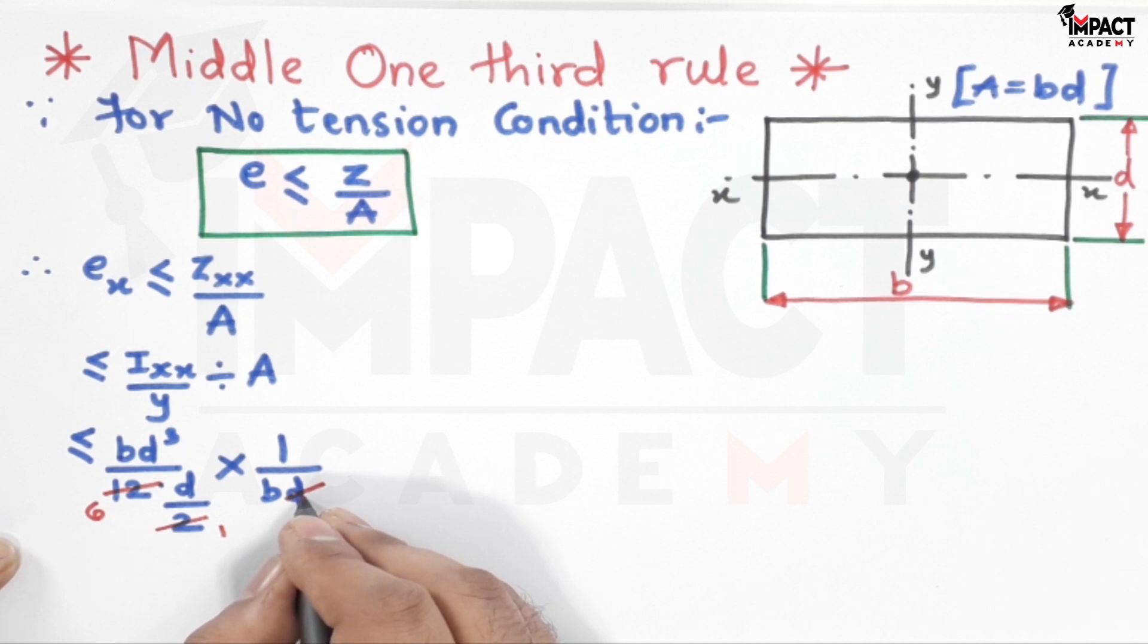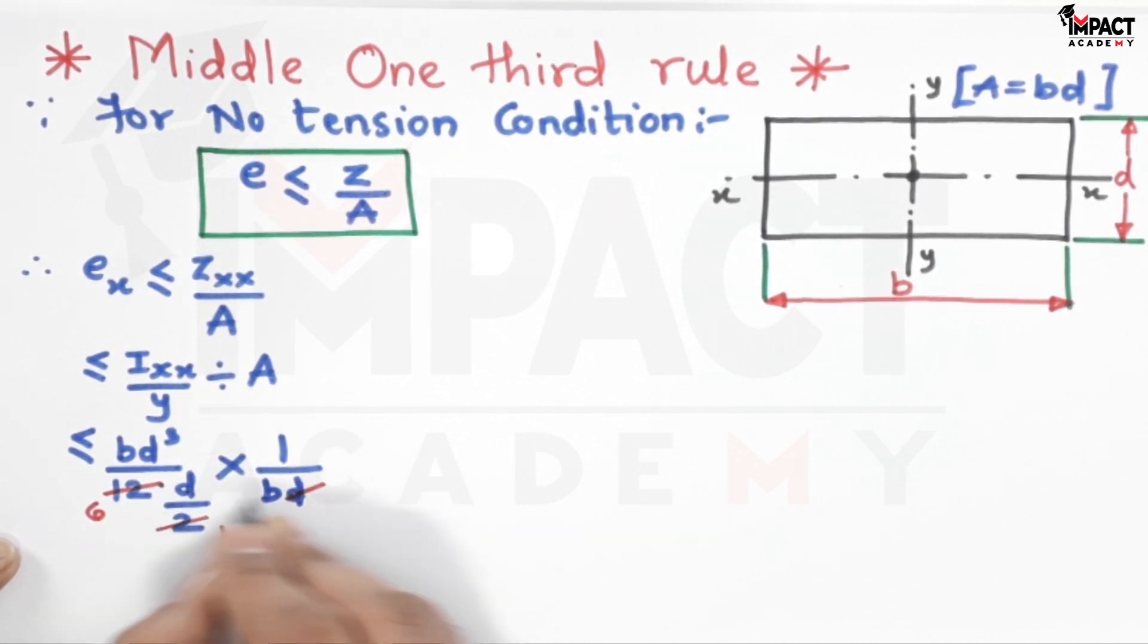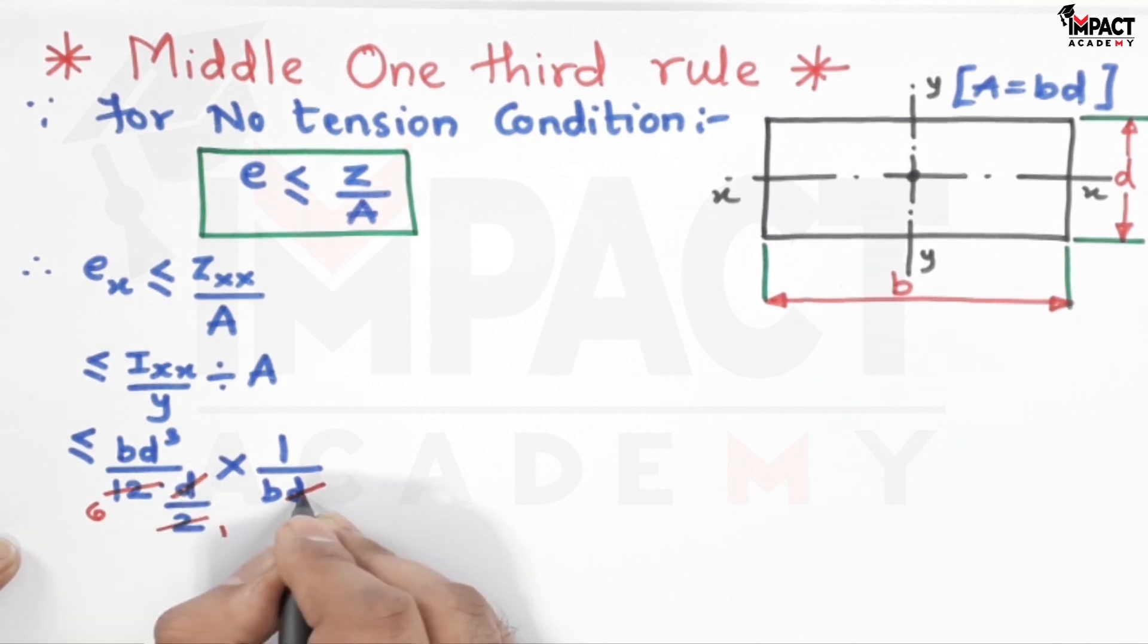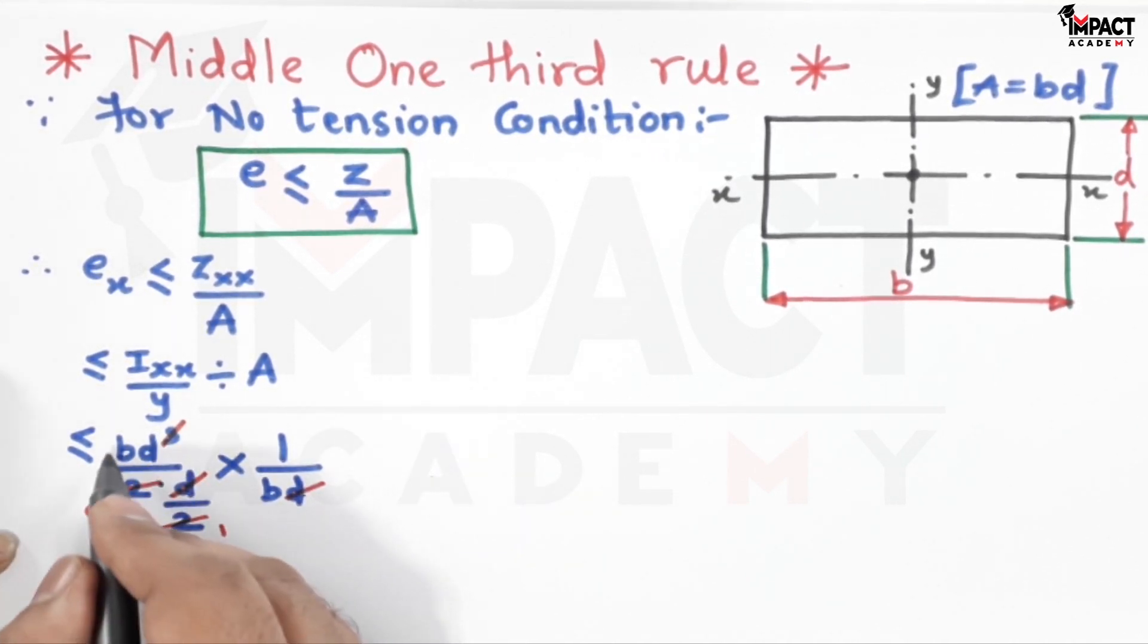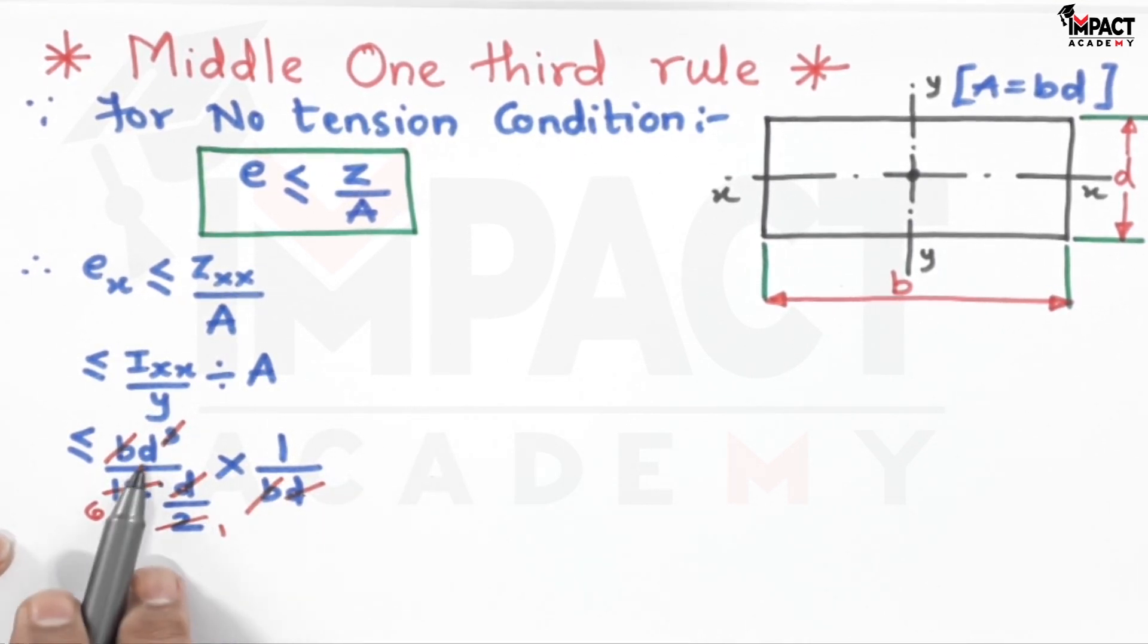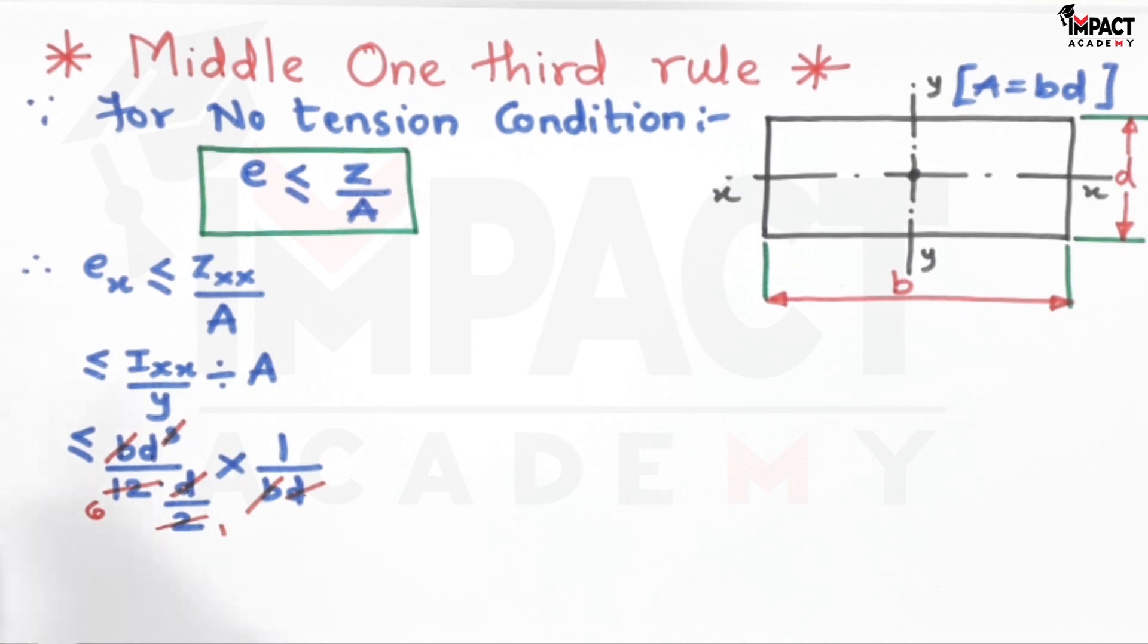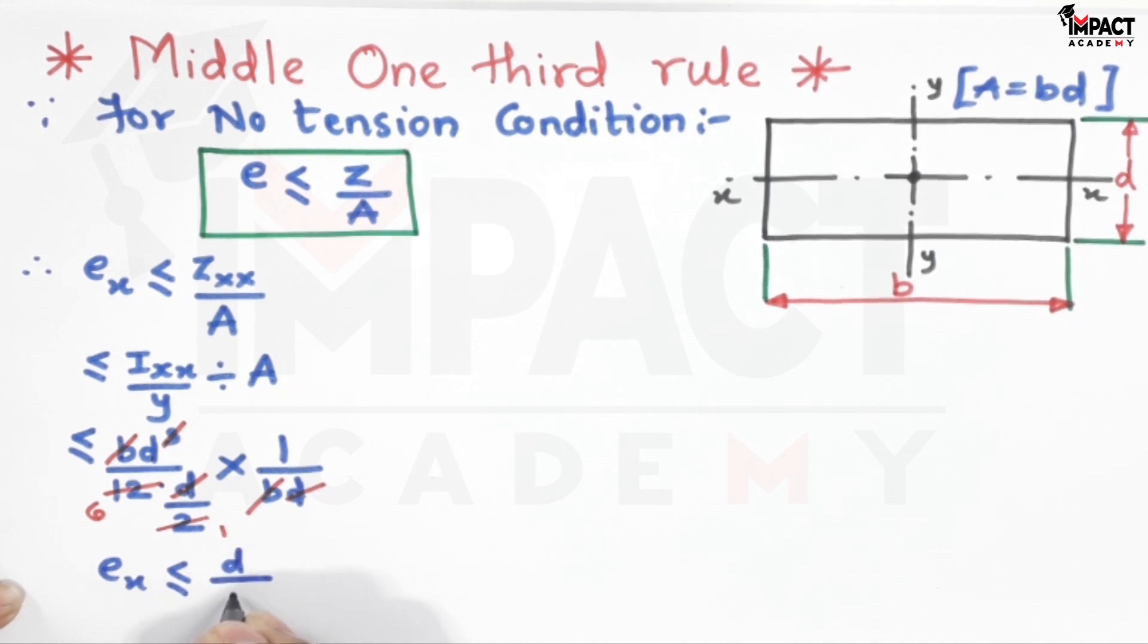Next, after the cancellation, d gets cancelled. Here there is d and d that becomes d², so d² gets cancelled and d remains. Then b and b will get cancelled out, so we are getting only d/6 here. So e_x is less than or equal to d/6.